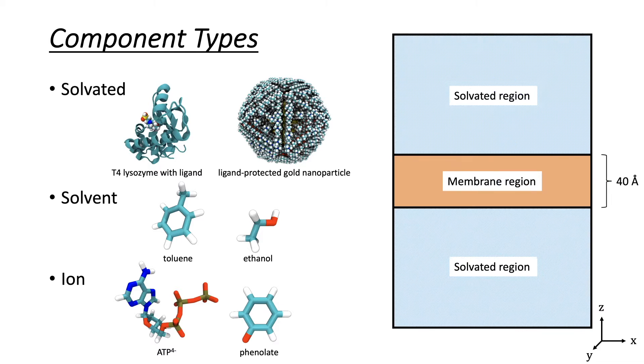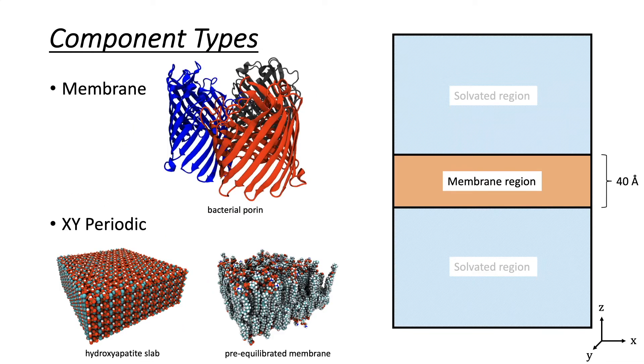For systems containing a membrane or other sheet-like material, the system is divided into a solvated region and a membrane region. The solvated, solvent, and ion component types are placed in the solvated region, and the membrane and XY periodic types are placed in the membrane region. If the system does not have a membrane or periodic component, the whole region is the solvent region.